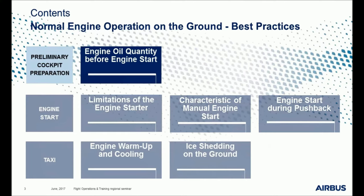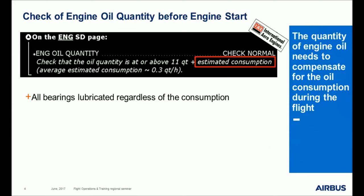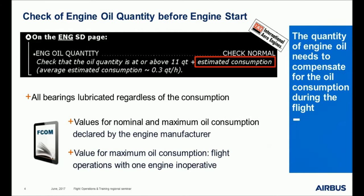Let's explain why a minimum oil quantity is required. The quantity of engine oil needs to compensate for the oil consumption during the flight, and needs to remain sufficient at all times in order to correctly lubricate the bearings all along the flight. It must remain valid regardless of the consumption value. The FCOM procedure takes into account the values for nominal and maximum oil consumption declared by the engine manufacturer. The value for maximum oil consumption covers flight operations with one engine inoperative.